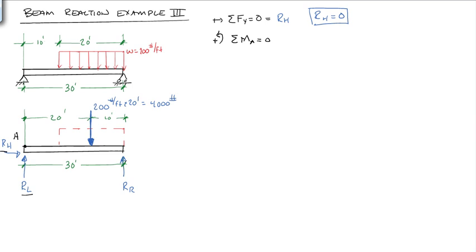And I'm not going to go through RL and RH, because we know since they pass through this point, RL passes through A, RH passes through A. Because they pass through that point, they don't produce any moment. So they will have 0 effect. Let's just run through the 4,000 and the RR.